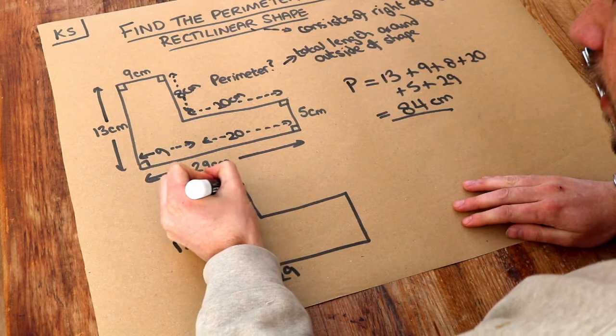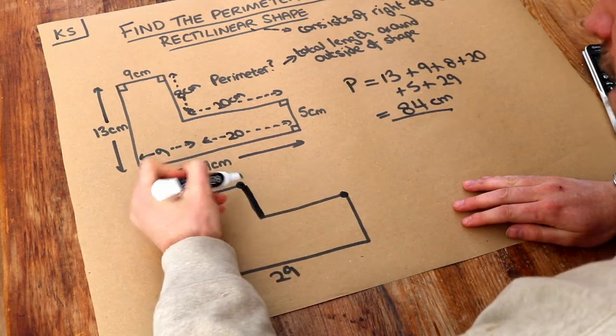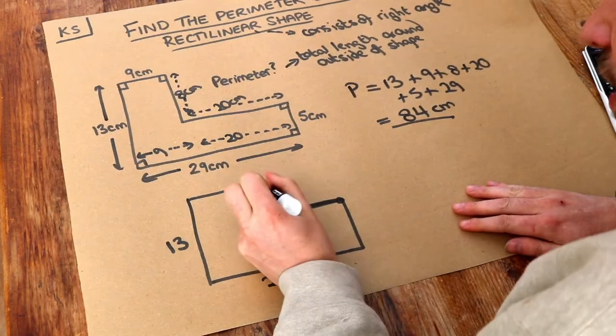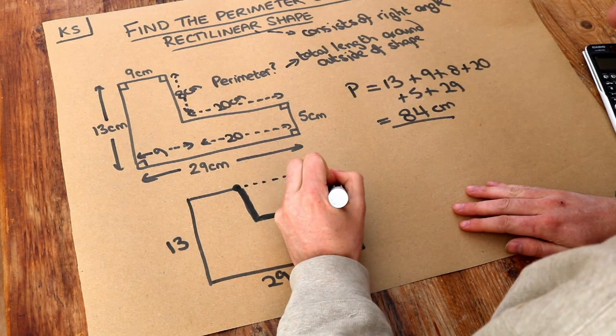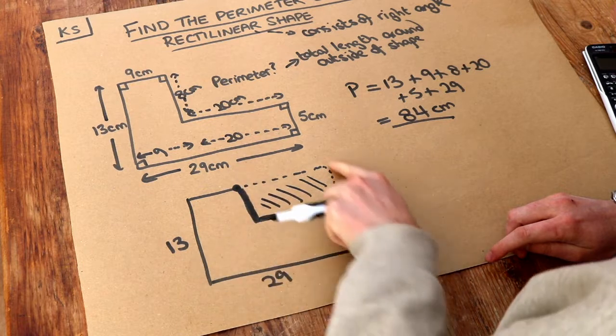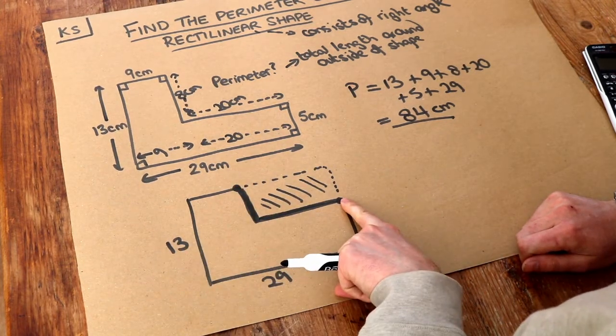Can you see that these two lengths here, so this length here and this length here, that would be the same as if we had this length here and this length here. And to try and visualize this, imagine this was kind of a swimming pool. This rectangle here was a swimming pool. And you were standing at one corner of the swimming pool and you want to get to the opposite corner of the swimming pool.